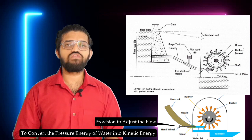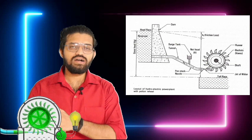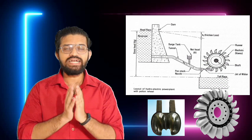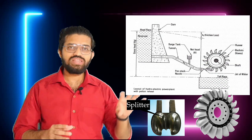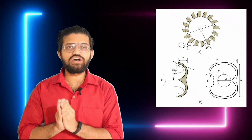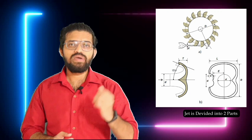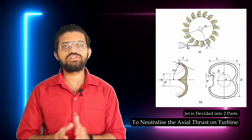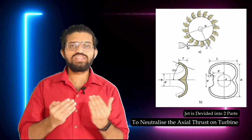The water coming out of the nozzle has higher velocity and higher kinetic energy. This jet strikes the Pelton wheel, which is a circular wheel having bucket-shaped blades. Each bucket consists of two hemispheres connected to each other with a splitter at the center. When the high-velocity jet strikes the bucket, the splitter divides the jet into two parts. The main function of the splitter is to reduce and neutralize the axial thrust produced by the striking jet.